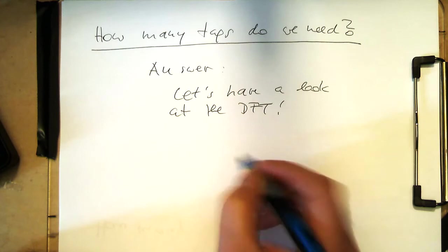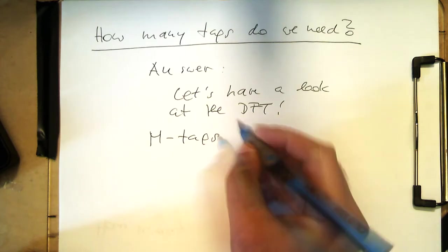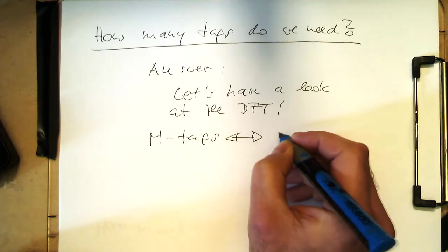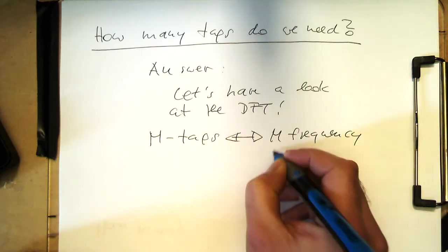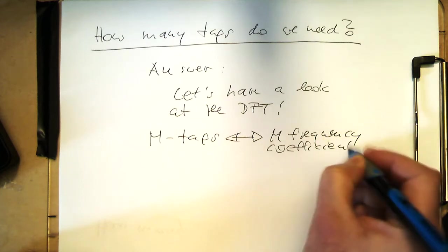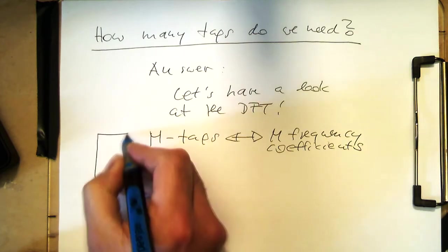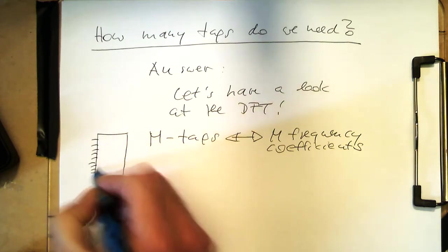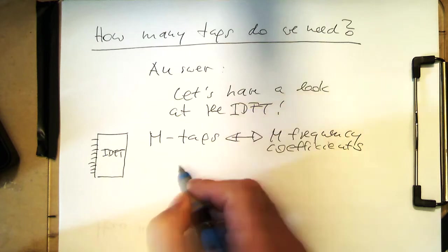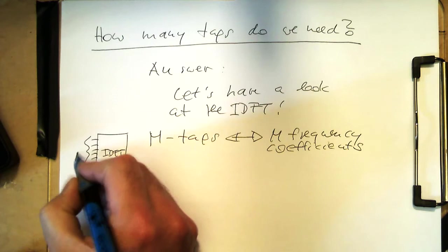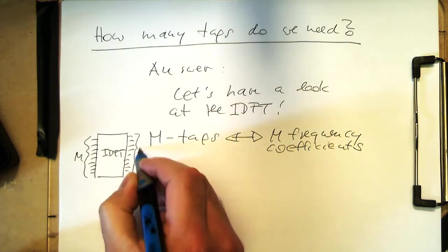So the DFT, remember, if we have an FIR filter of m taps, then this means after we've done the DFT, we've got m frequency coefficients. So if we have here our frequency coefficients, and that's our IDFT, it's an inverse discrete Fourier transform, and these here are m coefficients, then we're getting again m taps out here. So that's on both sides, m.